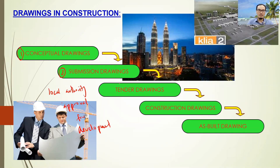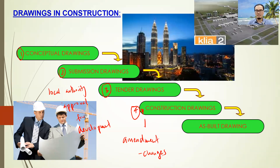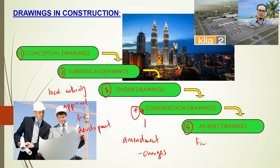Then they will come out with the tender drawing for the tender process in order to select the main contractor for the project. Before kickoff of construction, they will produce the final construction drawings. However, there will be a lot of amendments during construction depending on changes to structural elements, finishing, and so on. Finally, after construction is finished, they will produce the as-built drawing, which is based on the final construction on site.